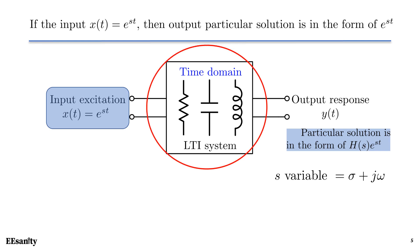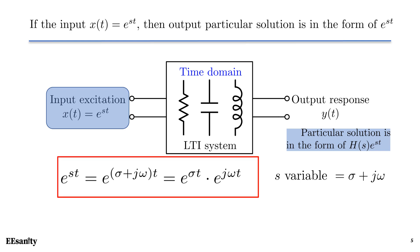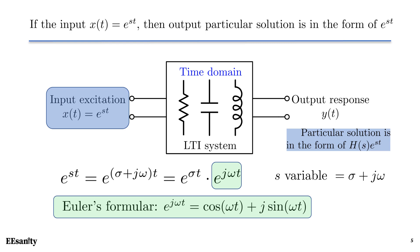The block diagram shows a LTI or linear time-invariant system with input excitation x of t and output response y of t. If the input x of t equals to exponential of st, then the output particular solution is also in the form of h of s times e to the power of st. h of s represents the linear transfer function of the system. We can rewrite the exponential of st in terms of exponential of sigma t times exponential of j omega t. Using the Euler formula, we can rewrite the second part as cos omega t plus j sin omega t. Notice that this is a pure sinusoidal waveform with magnitude 1.